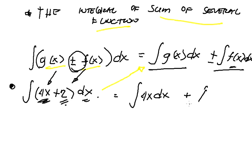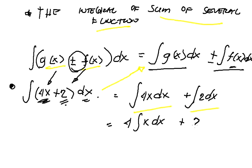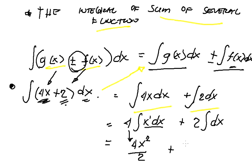We have the integral of 4x dx plus the integral of 2 dx. Then from here we can apply the rules separately. We have 4 times the integral of x dx plus 2 times the integral of dx. The integral of x dx gives us x raised to 1 plus 1, which is x squared over 2, so we get 4 times x squared over 2, which is 2x squared, plus 2x.